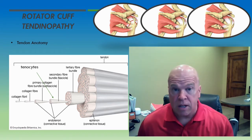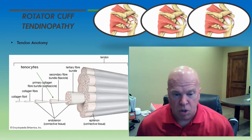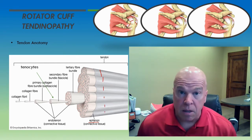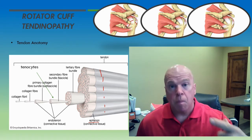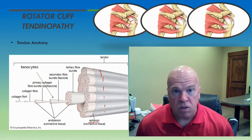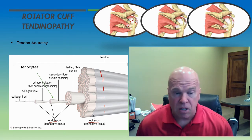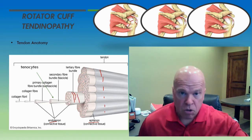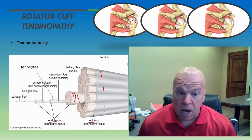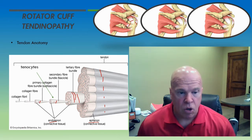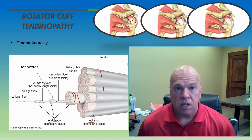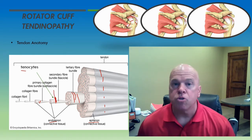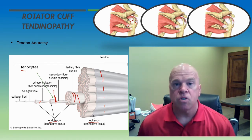Down in the tendon, those connective tissues change their name. The epimysium becomes continuous with the epitenon — this connective tissue layer that surrounds the entirety of the tendon. Both the perimysium, which surrounds each of the muscular fascicles, and the endomysium, which surrounds each of the individual muscle fibers, become renamed as the endotenon. The endotenon circumferentially surrounds the tertiary fiber tendon bundles, the secondary fiber bundles, and also the primary fiber bundles. The tendon cells — the tenocytes — are located here in the secondary fiber bundles.